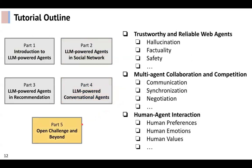In the last part of this tutorial, we will discuss the main open challenges and several potential research directions for future studies, including trustworthy and reliable web agents, multi-agent collaboration and competition, and human-agent interaction.